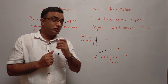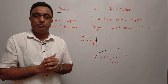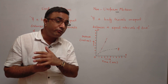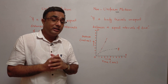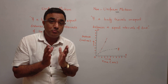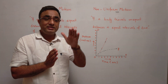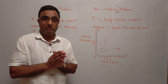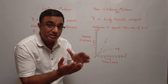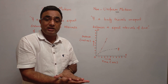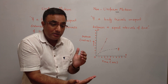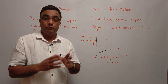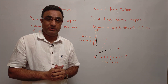Daily life में बहुत सारे non-uniform motion के examples हैं। मान लीजिए आप किसी ऊंची building के ऊपर से एक पत्थर नीचे फेंकते हैं। जैसे ही पत्थर ऊपर से नीचे गिरना शुरू करता है, पहले second में कम distance travel करता है, उससे next second में ज्यादा distance travel करता है। जैसे जैसे वो ground के नजदीक आता है, उसकी speed बढ़ जाती है और particular intervals of time में और ज्यादा distance travel होती है। तो यह भी non-uniform motion का example है। Thank you very much.